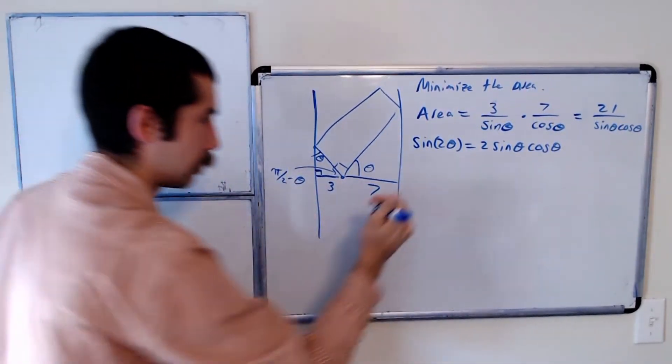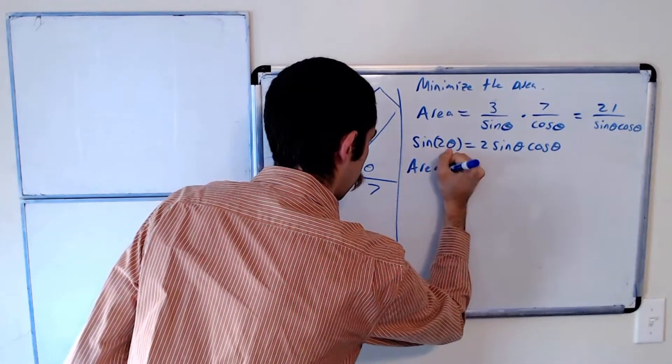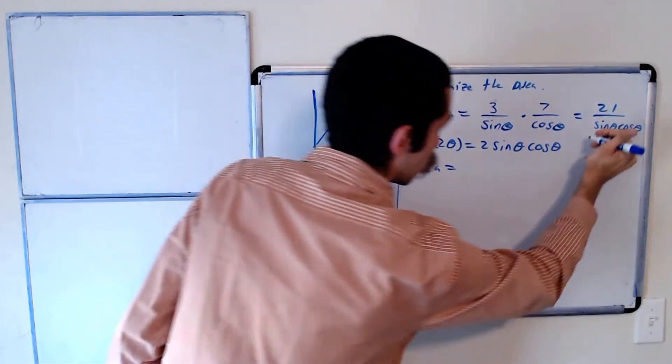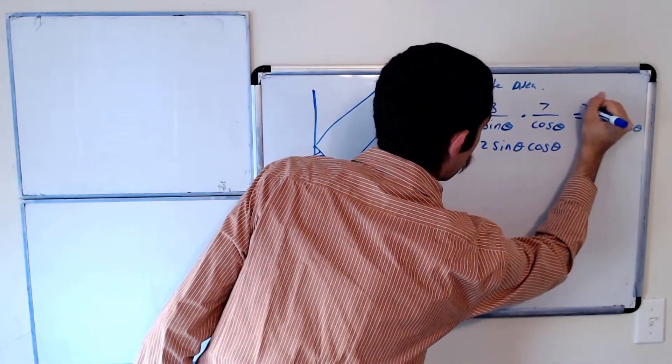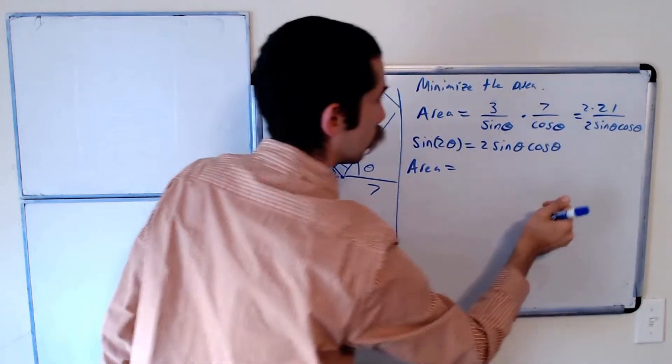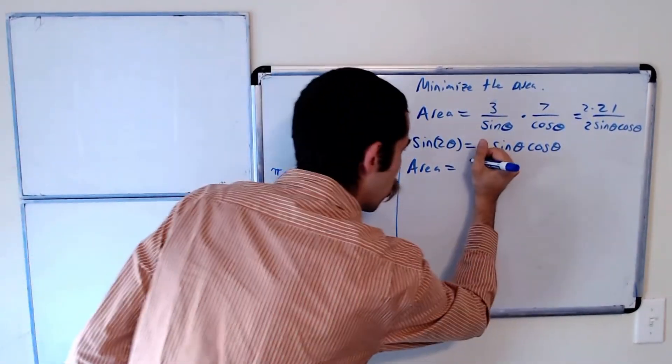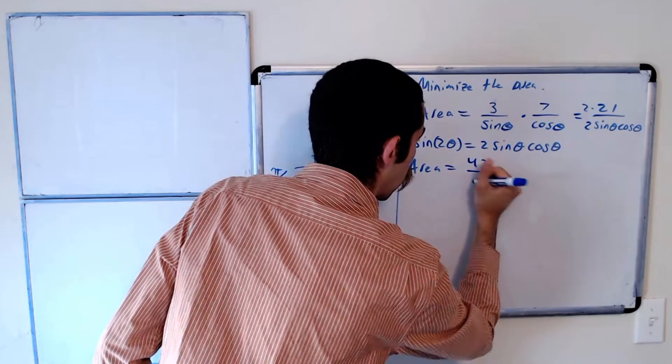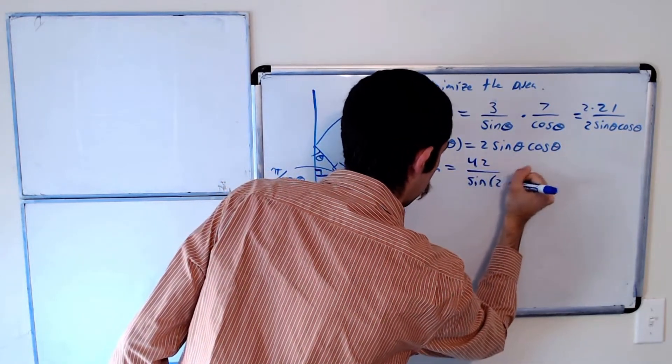Okay, so area—if we want to multiply this by 2, we have to multiply this by 2 as well—is equal to 42 over sine of 2 theta.